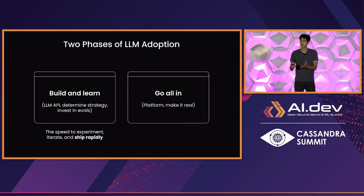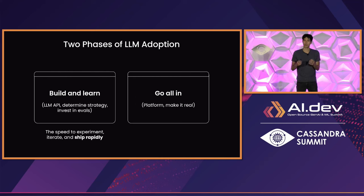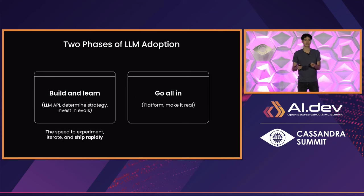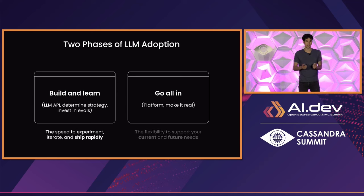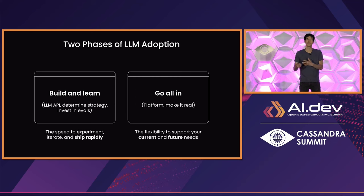Once you've validated that the product or feature you're building makes sense, we see organizations double down and really invest. At this point, you often go beyond the capabilities of existing APIs — you want to customize models more, you might start doing pre-training, you might use a whole lot of different models, model routing, and start thinking about scale, reliability, latency, and continuing to improve quality. What matters now is a broader platform with the flexibility to meet your current and future needs — for instance, being able to adapt an application to use multimodal models.